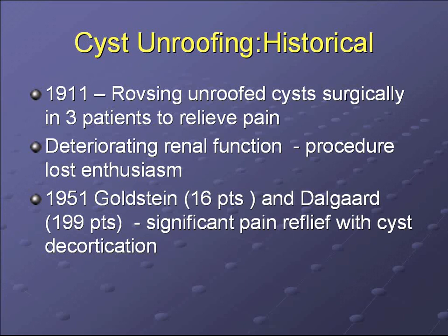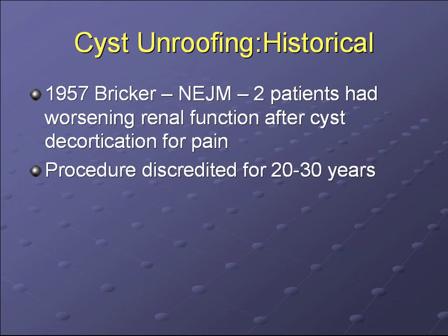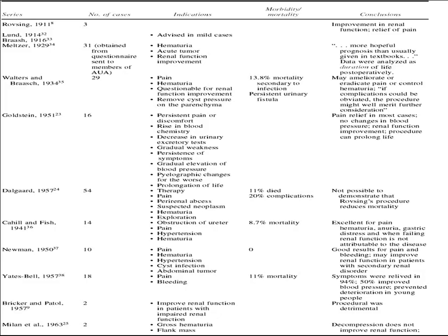Regarding cyst unroofing procedures, Robsing in 1911 was the first to describe surgically unroofing cysts in three patients to relieve pain. However, several patients were noted to have deteriorating renal function, and the procedure lost enthusiasm. In the 1950s two large series looked at cyst unroofing again and found significant pain relief with cyst decortication. However, in 1957 Bricker published a paper in the New England Journal showing two patients with worsening renal function after cyst decortication, and the procedure was basically abandoned for the next 20 to 30 years.